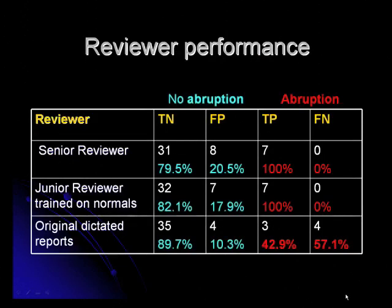This table is a summary of reviewer performance. In the original dictated reports, only three out of seven placental abruptions were detected, for a sensitivity of 42.9%. When reviewers were told to look for placental abruptions, their sensitivity was 100%, but their specificity had dropped a little bit, with a false positive rate of around 17% to 20% versus 10% in the original dictated reports.